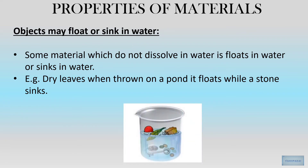Another property: when we put an object in water, it either floats or sinks. For example, dry leaves thrown into a beaker of water start floating, while a stone placed in the beaker sinks. So the property of a material can also be determined by whether the object floats or sinks in water.